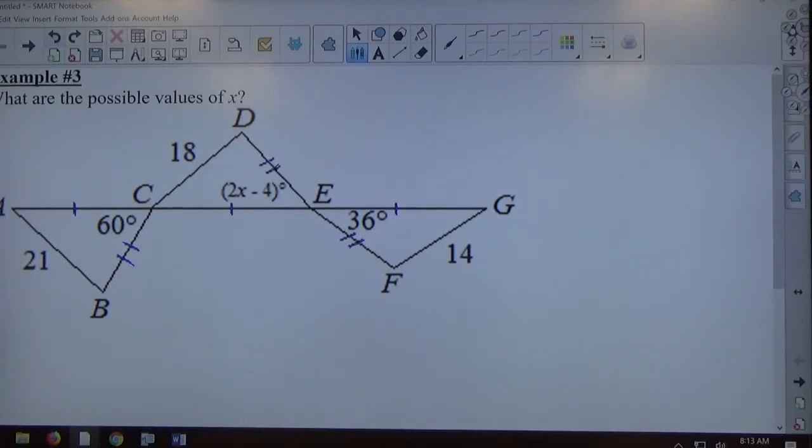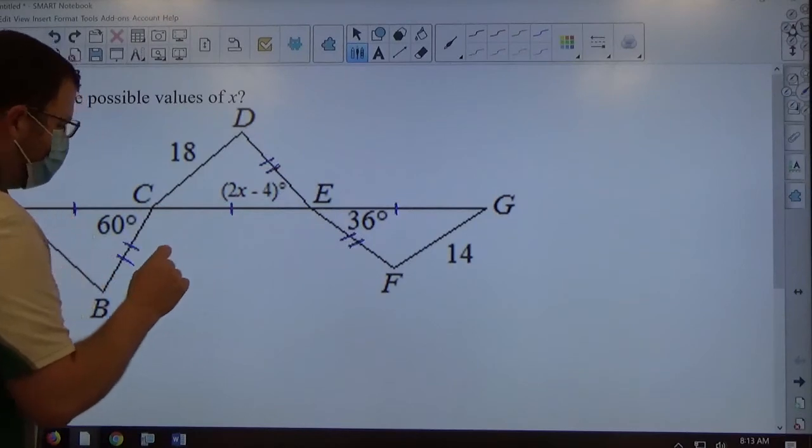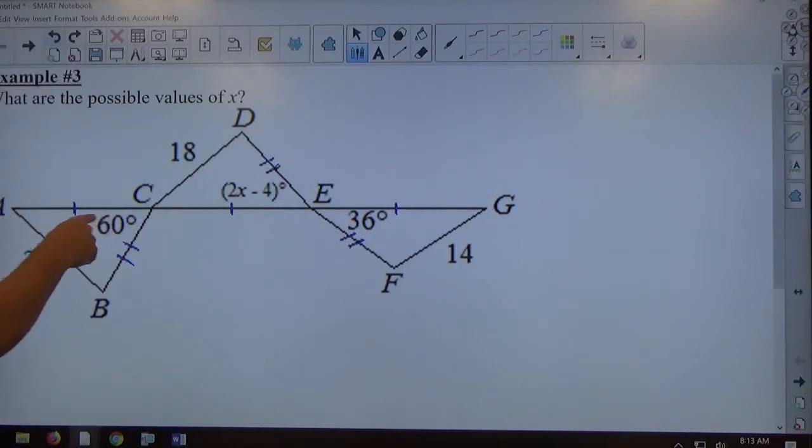If you're doing a proof, then it's really important about converse versus the actual hinge theorem. As long as you have this relationship that these sides congruent to these sides congruent to those sides, bigger side, bigger angle, bigger angle, bigger side. That's kind of what's going on with this theorem.